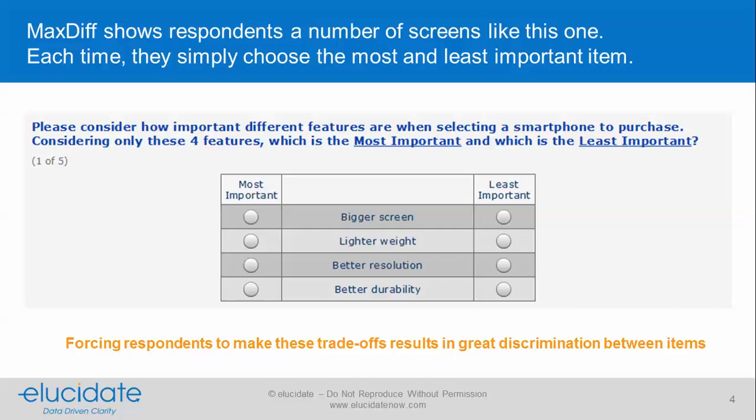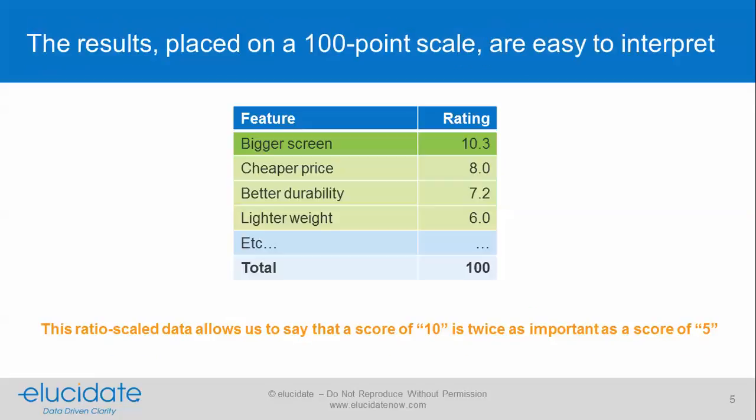MaxDiff takes a large number of items, puts them into an experimental design, and pushes a few items at a time back to respondents, asking them to check what is most important or least important to them, or most preferred and least preferred. They simply make those choices — we're forcing respondents to make trade-offs, and this results in really good discrimination between items.